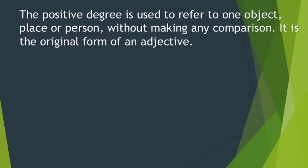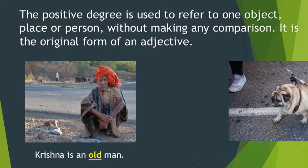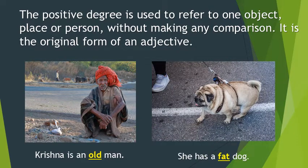The positive degree is used to refer to one object, place, or person without making any comparison. It is the original form of the adjective. When we say a sentence, there won't be any comparison — we are just giving information. For example: 'Krishna is an old man' and 'She has a fat dog.' Here there is no comparison; we are talking about only one person and one animal. The adjectives 'old' and 'fat' are in positive degree.